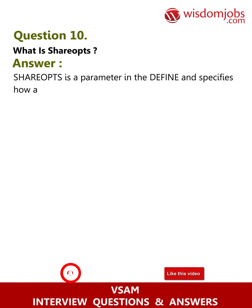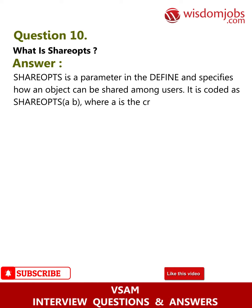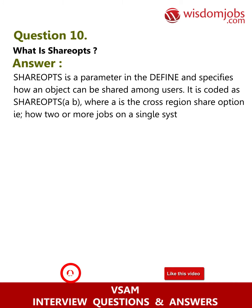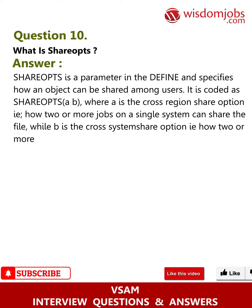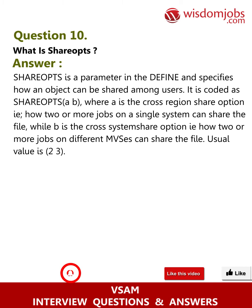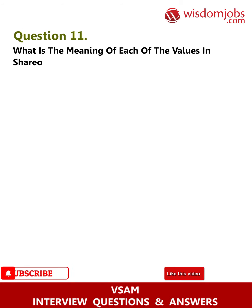Question 10: What is SHAREOPTIONS? Answer: SHAREOPTIONS is a parameter in the DEFINE and specifies how an object can be shared among users. It is coded as SHAREOPTIONS (A B), where A is the cross-region share option — i.e., how two or more jobs on a single system can share the file — while B is the cross-system share option — i.e., how two or more jobs on different MVS systems can share the file. The usual value is (2, 3).